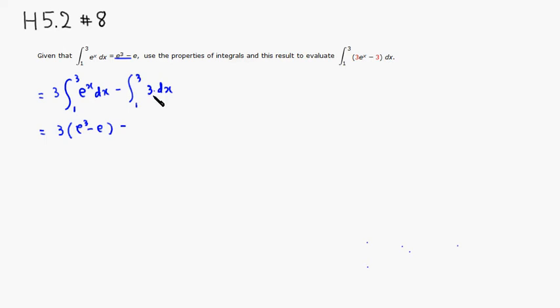Integral of a constant from 1 to 3 would be, if you look at the region, this is going to be a rectangular region. So here, and here is 1, here is 3, and function is 3, so up here. So you can see that the region is y equals 3, and they're going from 1 to 3.